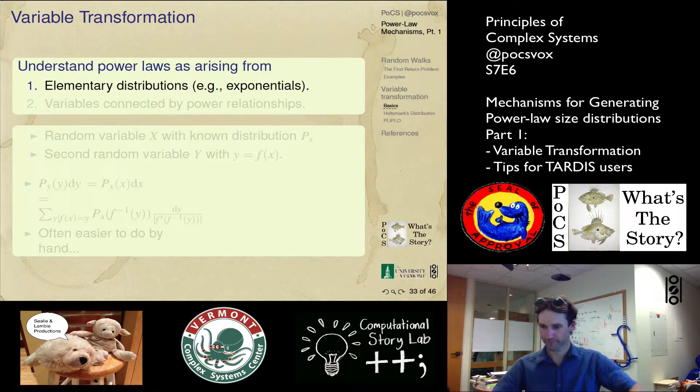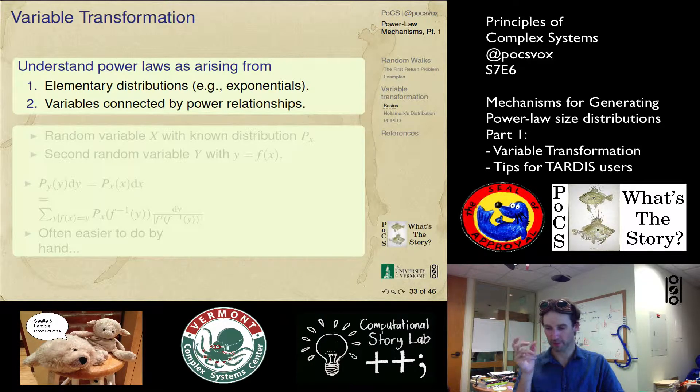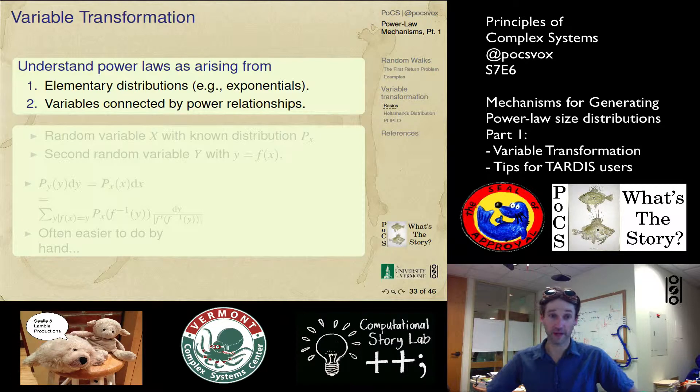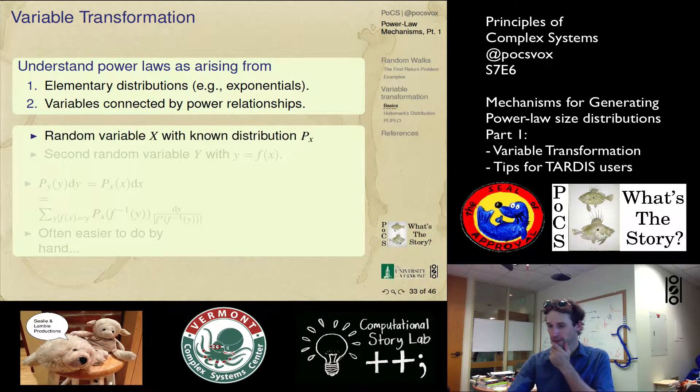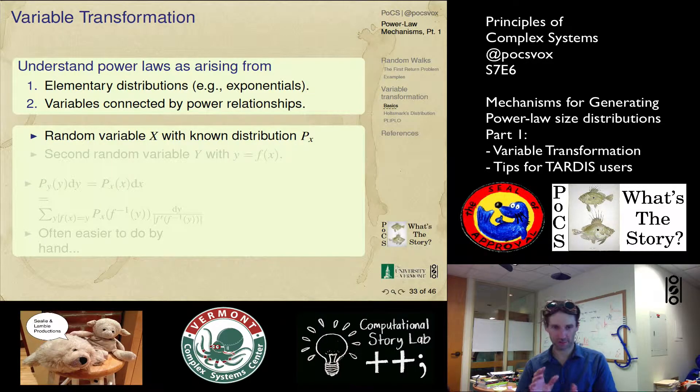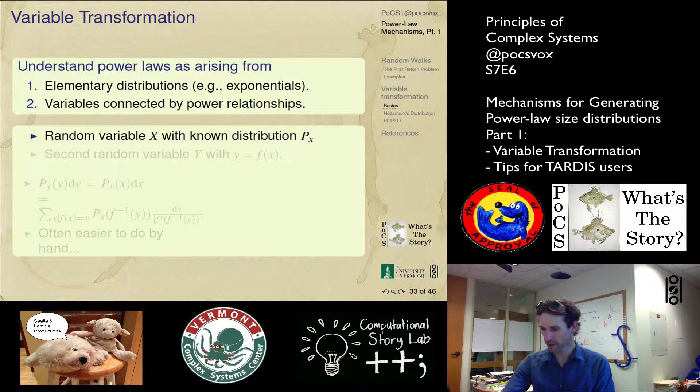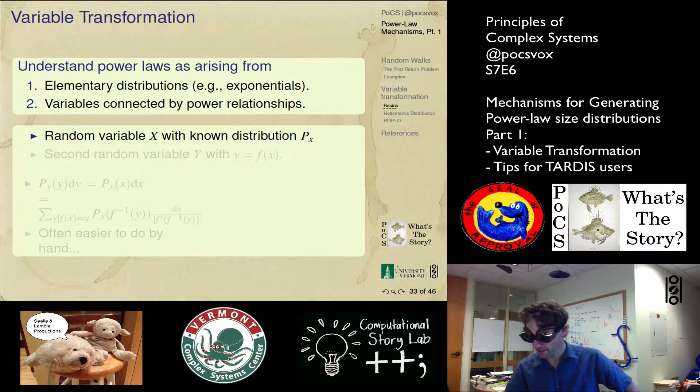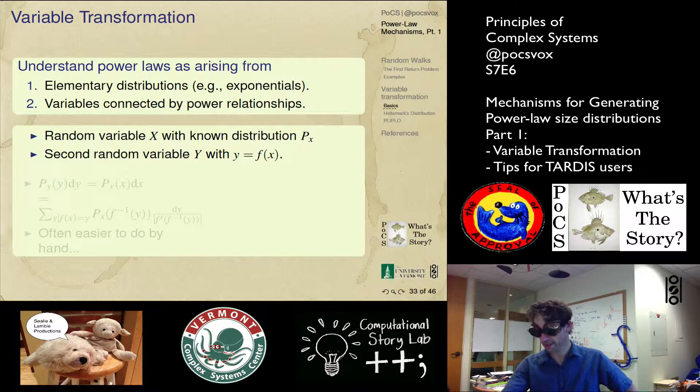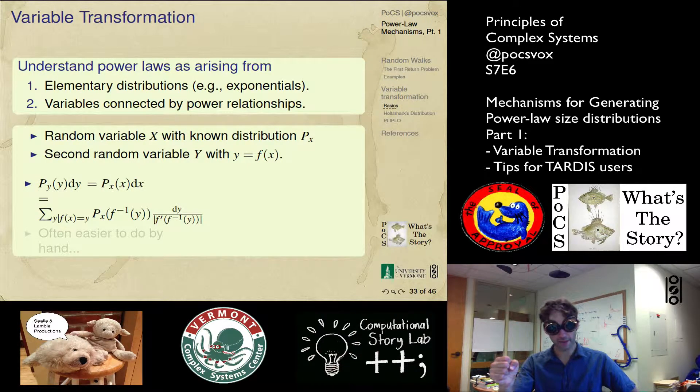We've got these two pieces: elementary distributions, such as exponentials, and then some connection between them, between a couple of variables, at least two variables in the system, that is a power relationship. So this is a simple kind of statistical result we'll be using. We start with a random variable x. It's got some distribution, p of x.